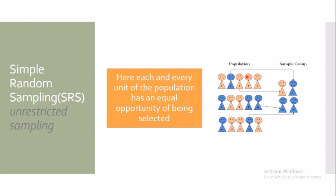As you can see in the figure, from a population the investigator has selected four people randomly, and this is the sample group that has been formed. While selecting, we have to be sure about two conditions. Only when both conditions are satisfied can we say that the sample selected is a simple random sample.